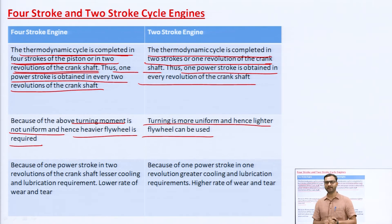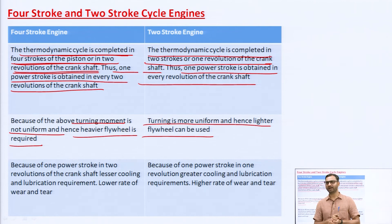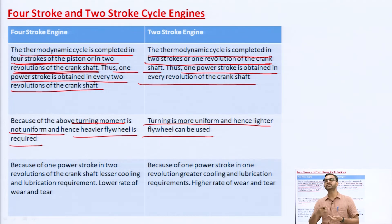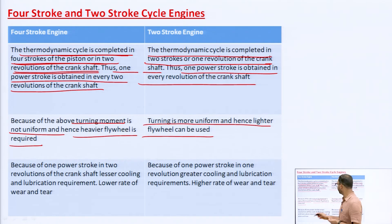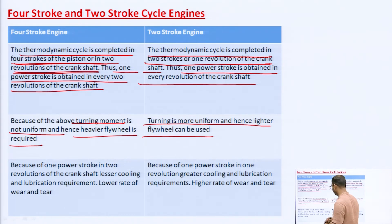The main function of a flywheel is to store energy. In one cycle, energy is received during one stroke (the power stroke), and during the remaining strokes no energy is produced — so energy is required for those strokes. The flywheel provides that energy. Due to this, in a four-stroke engine a heavier flywheel is required, whereas in a two-stroke engine a lighter flywheel is sufficient.